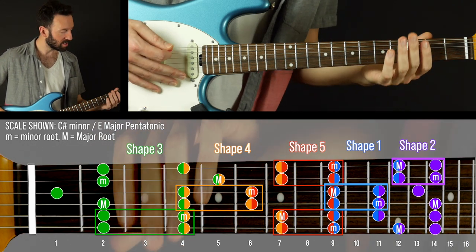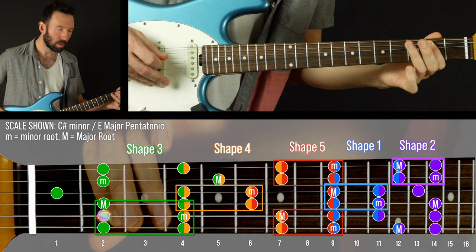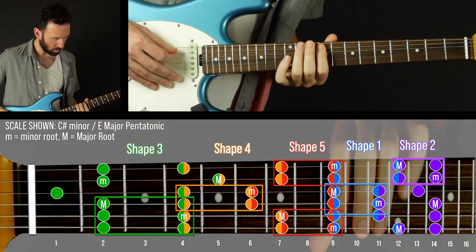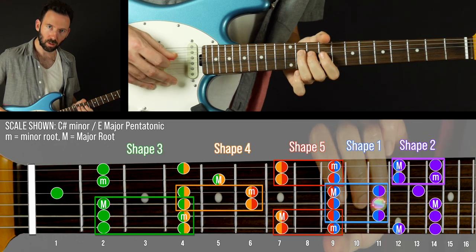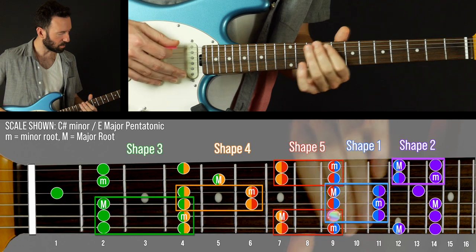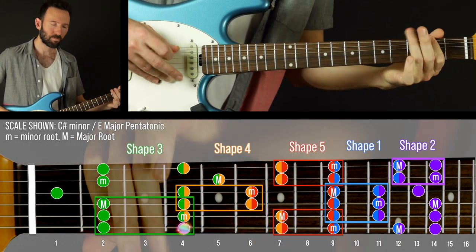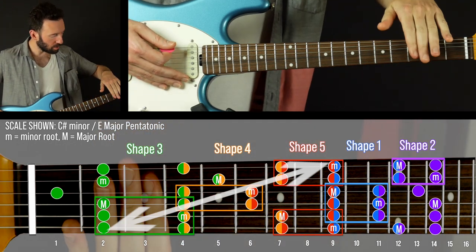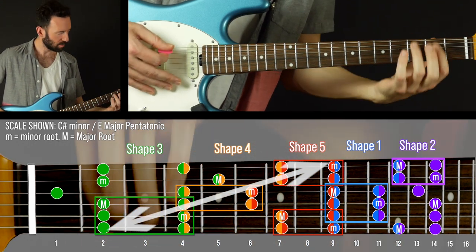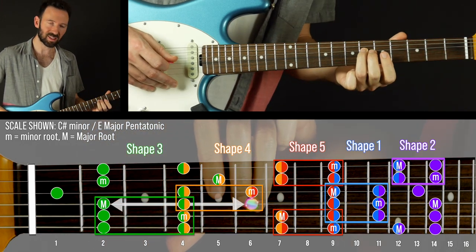The cool thing is that in shape three we have a three by two. We also have that in shape one. Those are the same notes just an octave apart. So from shape three into four into five we're going to take advantage of that third string to slide in.